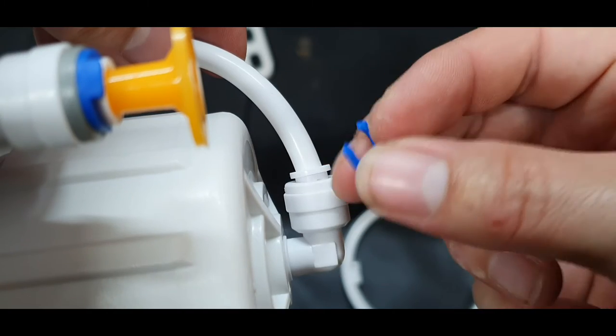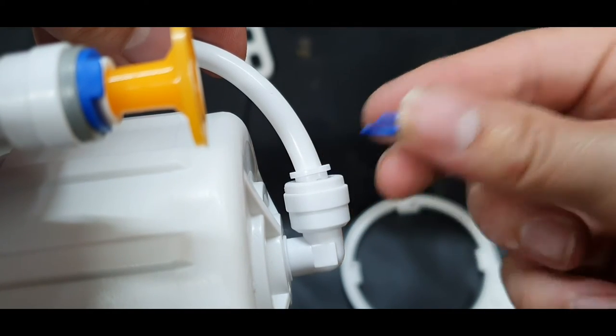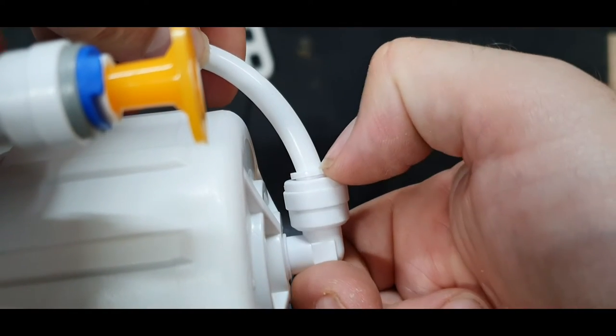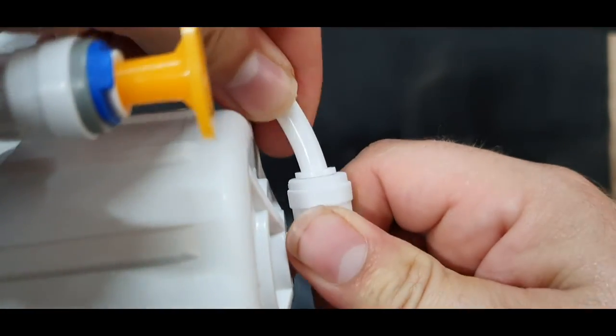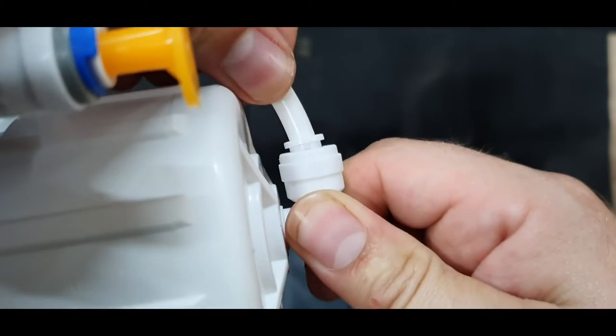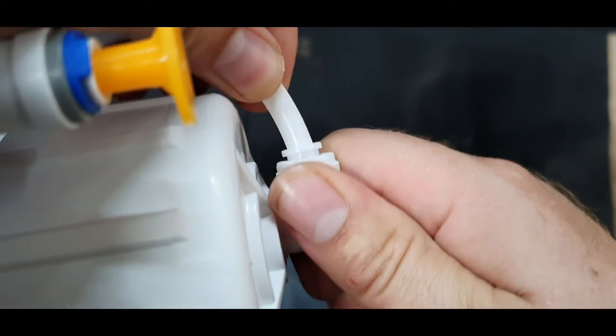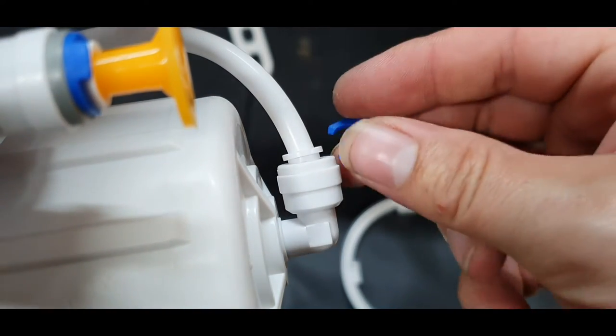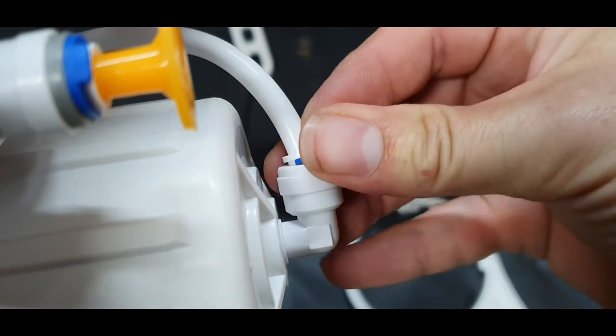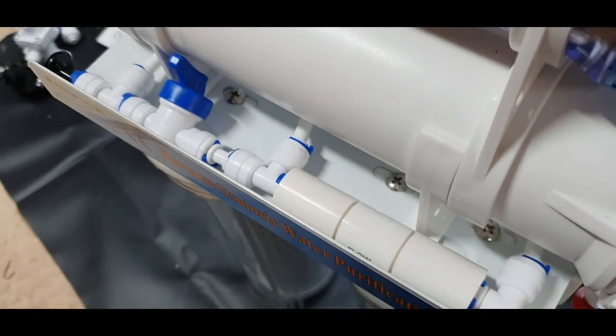It's simply just push fits. These little blue things are just clips to stop them pushing in by accident. Then you just push the fitting in and the pipe comes out. And then when you put the pipe back in, it bites onto it and it can't be removed without some extreme force. So that's kind of it for the pipe work.